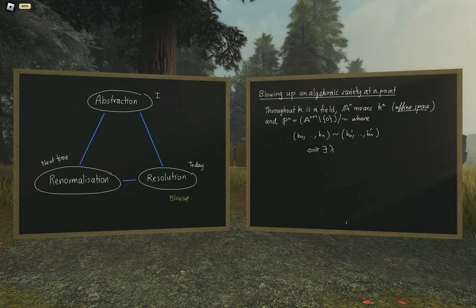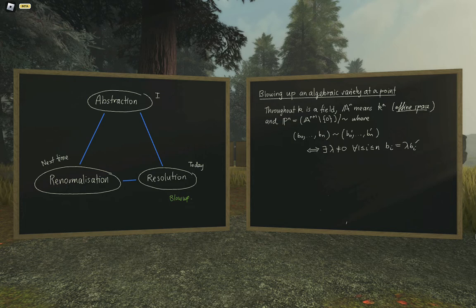The relation is that they lie on the same line — that is, there exists a non-zero lambda such that bi equals lambda times bi-prime, for all i. So this is projective space.